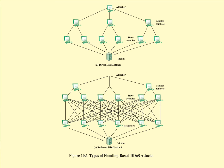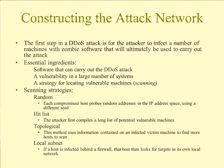The zombies construct packets that require a response and contain the target's IP address as the source IP address. These packets are sent to uninfected machines — the reflectors — which aren't infected with anything. For example, an ICMP packet is sent and echoes back to the target, so all of the data from all of these computers bogs down that one machine. This would be known as a reflector DDoS attack.